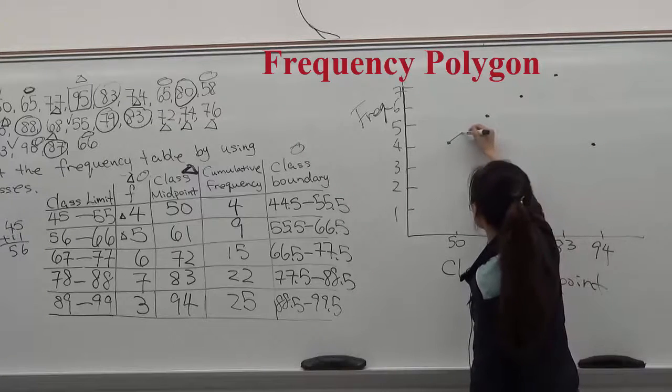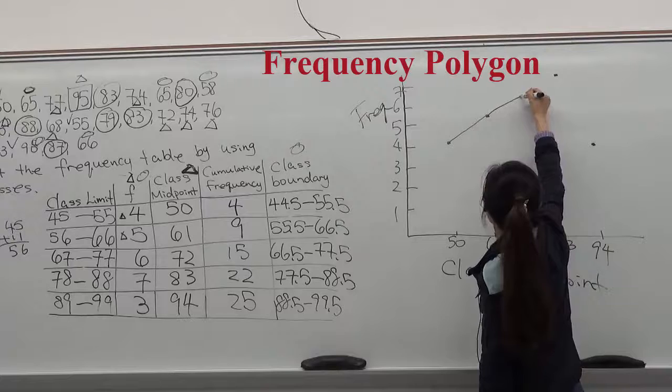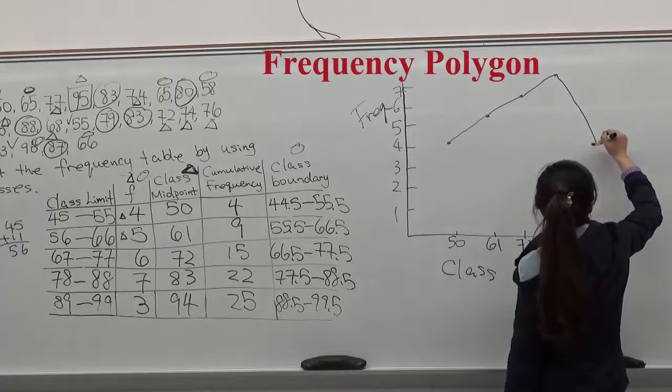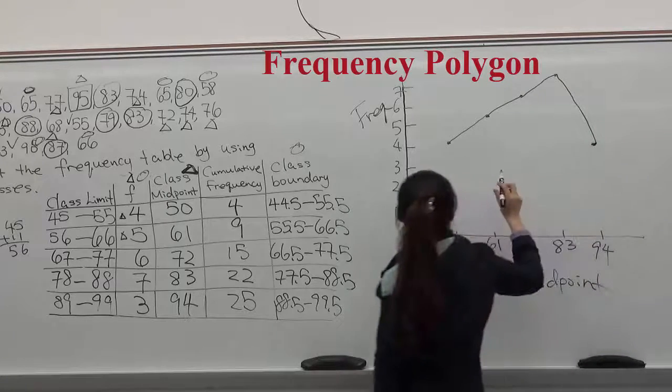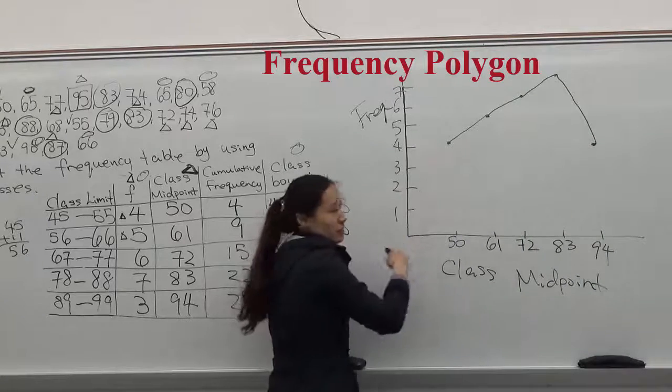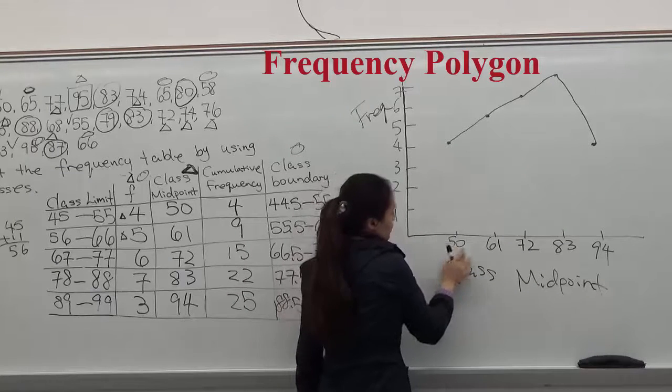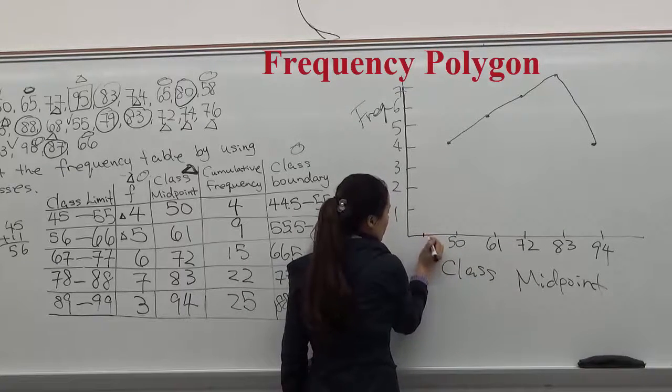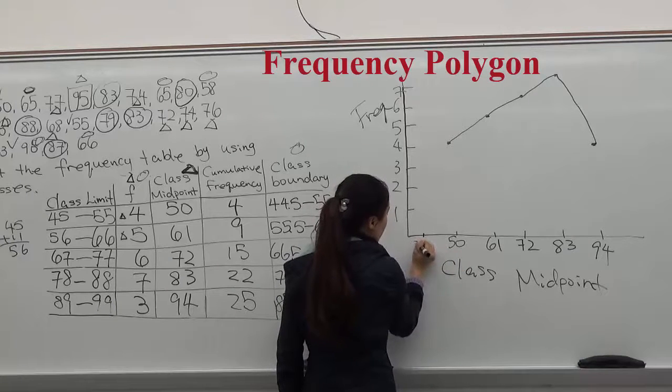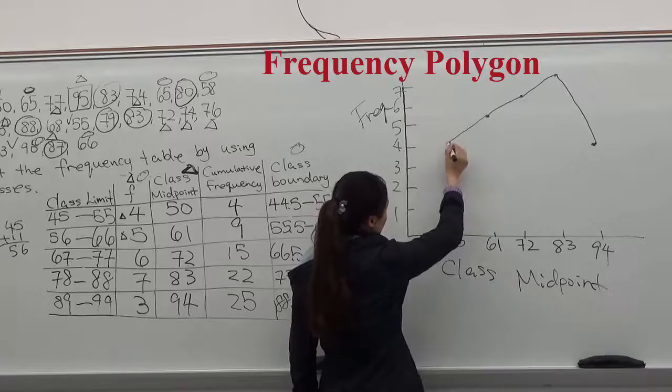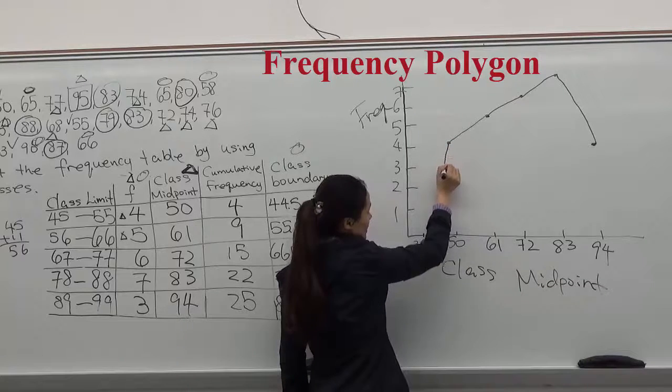First, you have to connect all those dots. But don't forget to connect those two ends. So if we know this is 50, so we know the left number is before 50. It has to be 39. So you will connect that point to 39, 0.